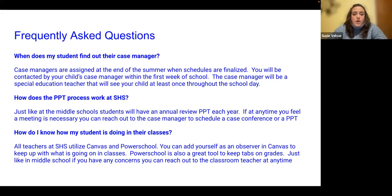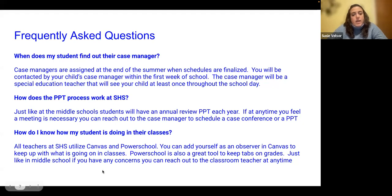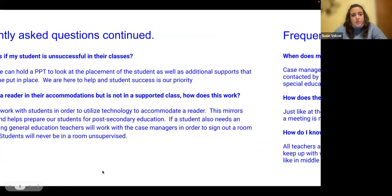Another question: it's a big school — how do I know how my student is doing in their classes? You can add yourself as an observer on Canvas to see what projects are occurring and when they're due. But the biggest tool at the high school is PowerSchool — grades are always updated and it's easy to see what's been turned in and what hasn't. If an assignment is missing, teachers will put in a zero as a placeholder, but it frequently will have a comment such as 'assignment currently missing but can be handed in by December 5th.' Both Canvas and PowerSchool are great ways to check in on your student, as well as the case manager.